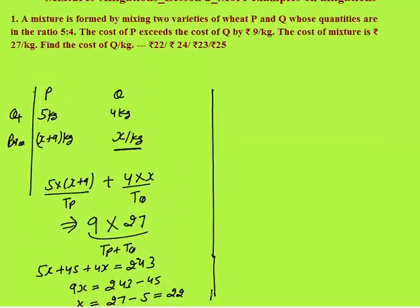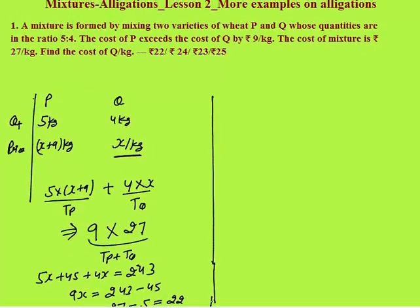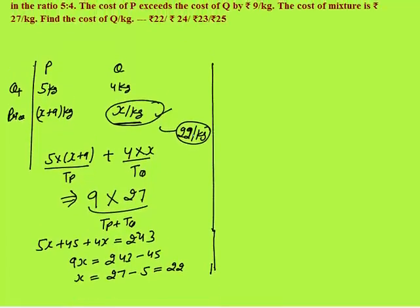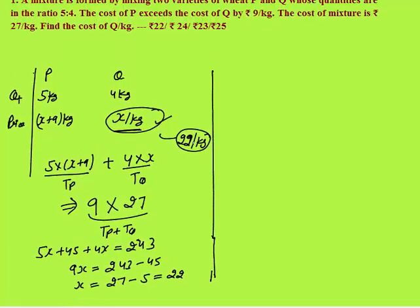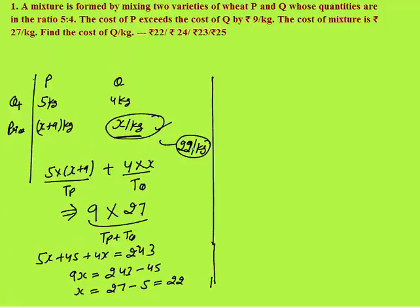What we need to calculate? We need to calculate the cost of Q type of wheat per kg, and that is the value of X. You got X as 22 per kg. That is your final answer — 22 per kg is your final answer.